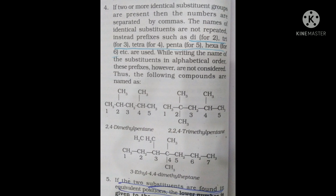For example, a compound with two CH3 groups at positions 2 and 4 on a 5-carbon chain is named 2,4-dimethylpentane. The longest chain has 5 carbons (pentane), and there are two methyl groups — hence 'dimethyl'.